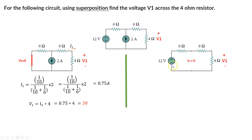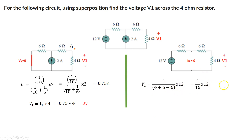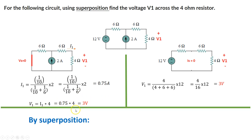Now using the voltage divider for the voltage source circuit: the three resistors are in series, so the total series resistance is 4 + 6 + 6 = 16 ohms. The voltage across the 4 ohm resistor is (4/16) times 12 volts, which equals 3 volts. So 3 volts comes from the voltage source, and 3 volts comes from the current source. By superposition, the total voltage V1 equals 3 volts plus 3 volts, which equals 6 volts.